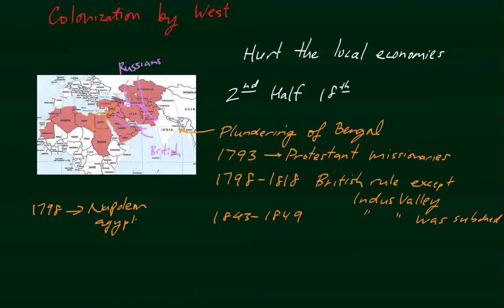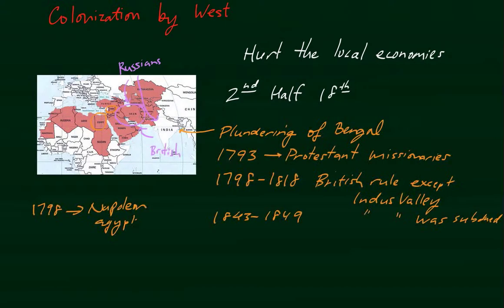Both Britain and Russia did promote technical progress, but really they promoted technical progress that primarily aided their missions and hindered those that did not. For example, they blocked things like the railway, fearing it would endanger roads or strategic positions. From this point onward, there were a whole series of additional occupations and colonizations, which will be covered in the next video.